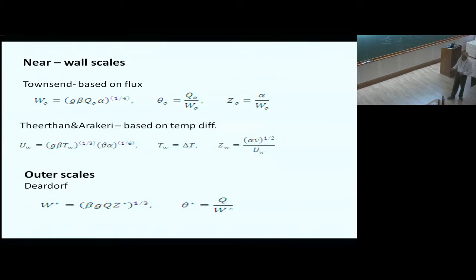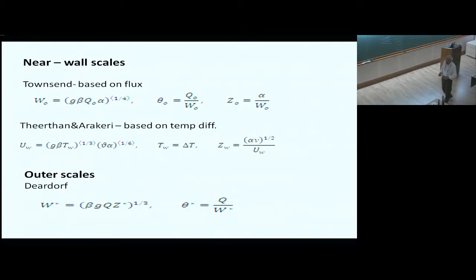For the outer scales, Deardorff proposed that the outer flow should scale in a way related to the heat flux, going like the overall height to the power of one-third. For some reason, the current literature seems to have forgotten about these classical works, which is unfortunate because both these scales are rarely mentioned.